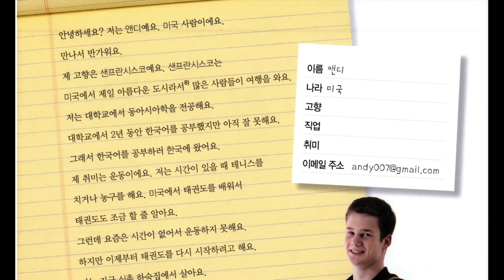Let's do the reading part now. 안녕하세요. 저는 앤디예요. 미국 사람이에요. These are quite simple short sentences. Hello, I am Andy. I am an American person.